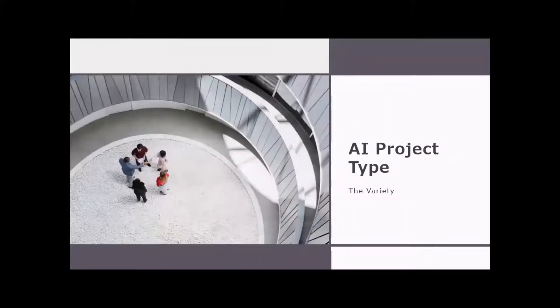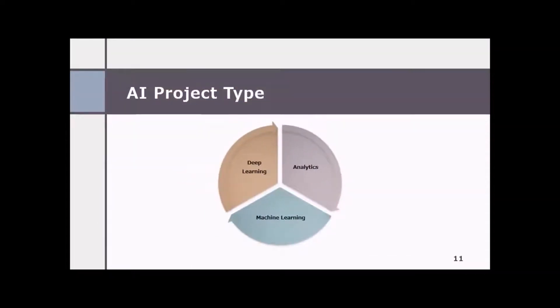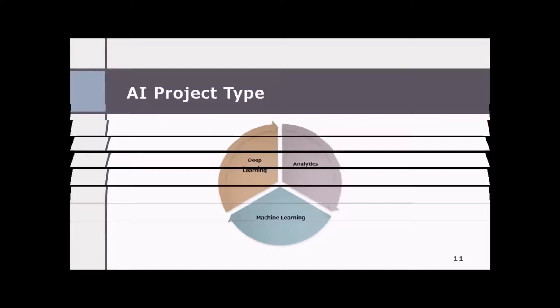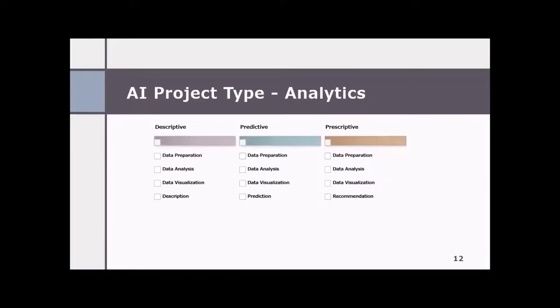So let's look at AI project type. AI project type can mostly fall into analytics, machine learning, and deep learning. Analytics is fundamental to any AI project. And depending upon whether business problem involves structured data where machine learning can be the option, or if it is unstructured data where deep learning using neural network is the best option. Analytics project type includes descriptive, predictive, and prescriptive. All of which can overlap based on scope of business requirement. All the type will deal with data preparation, data analysis, data visualization.